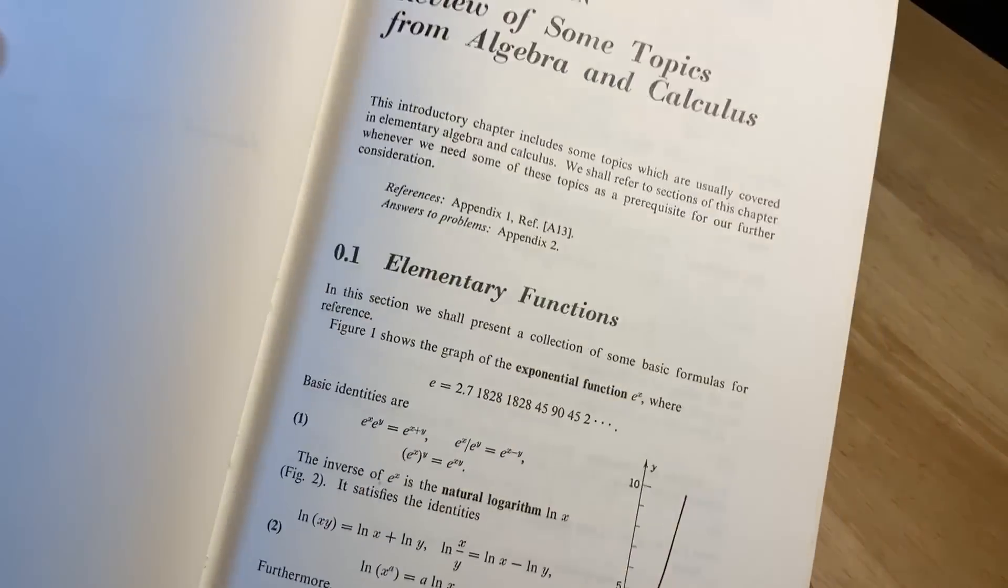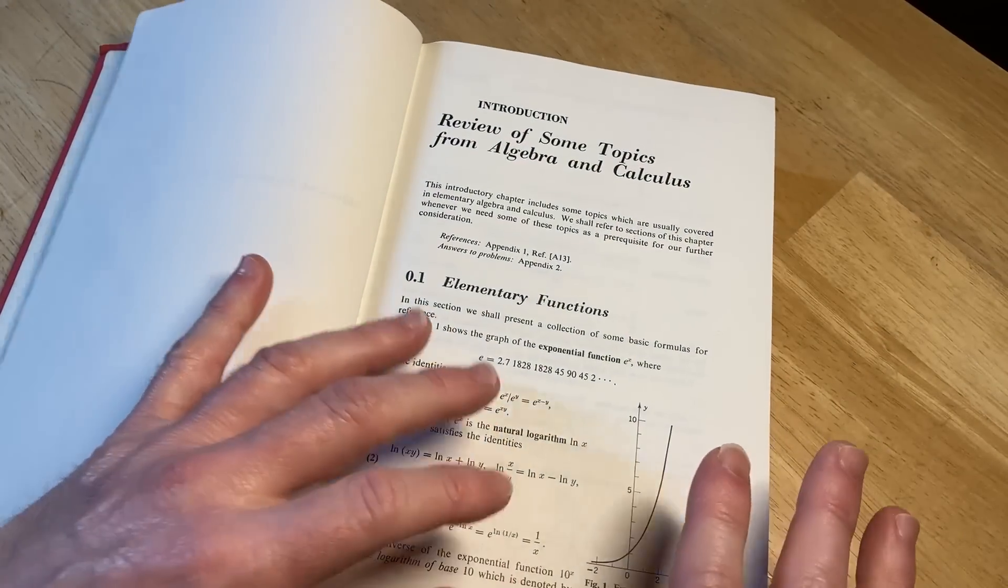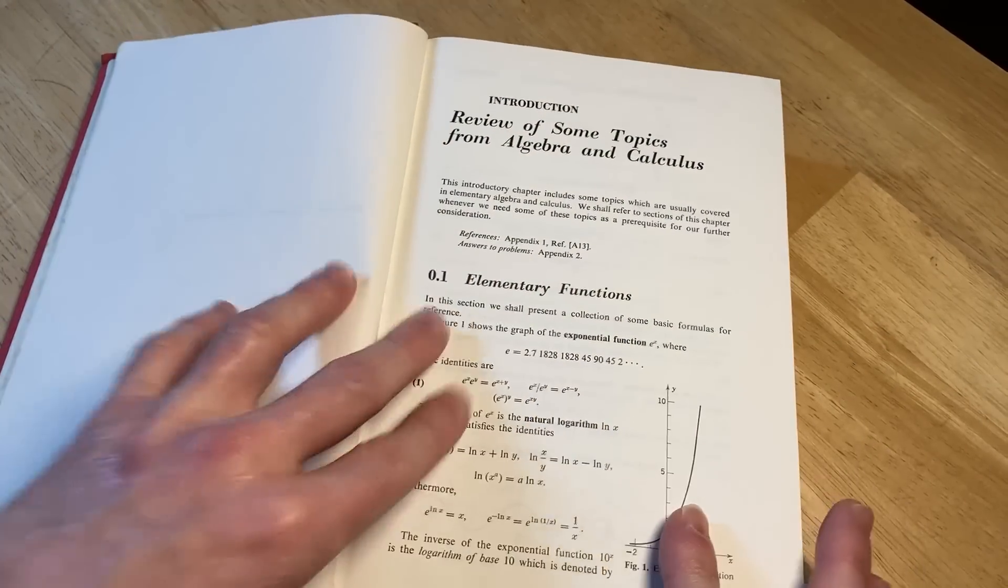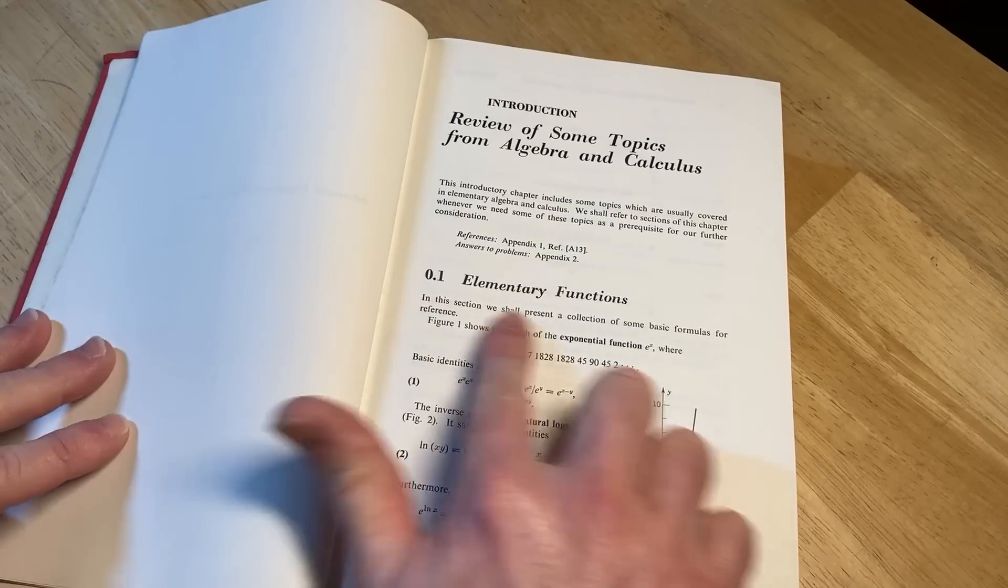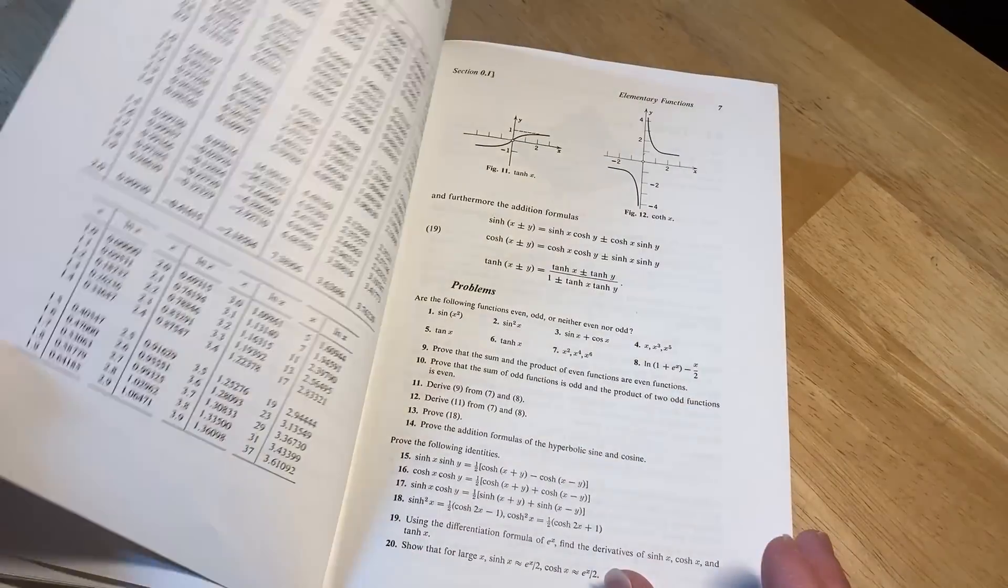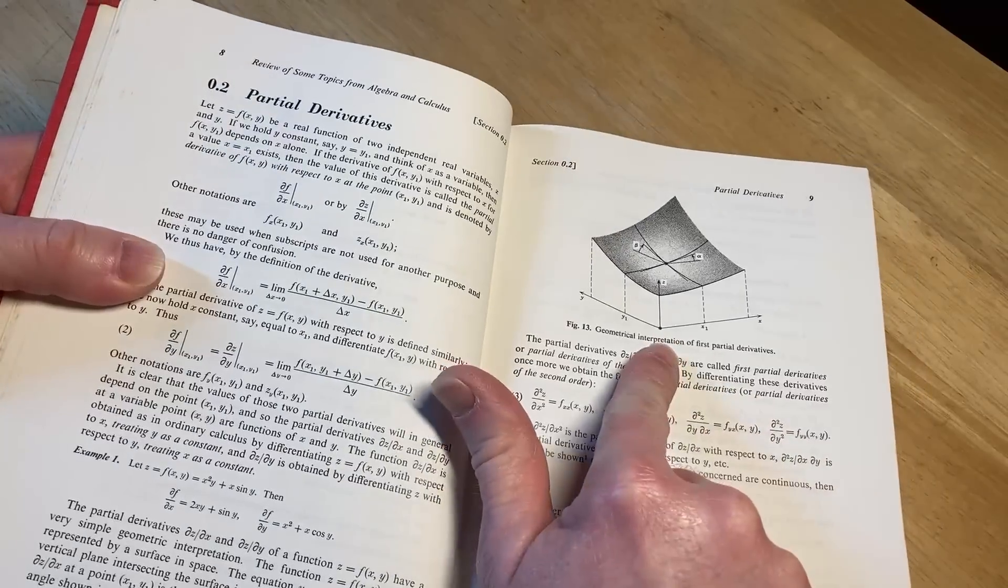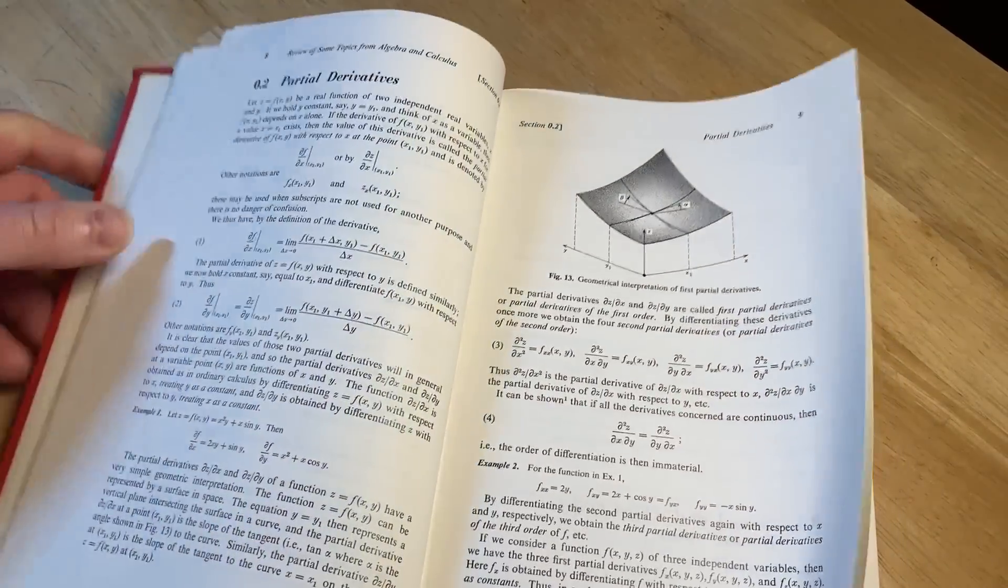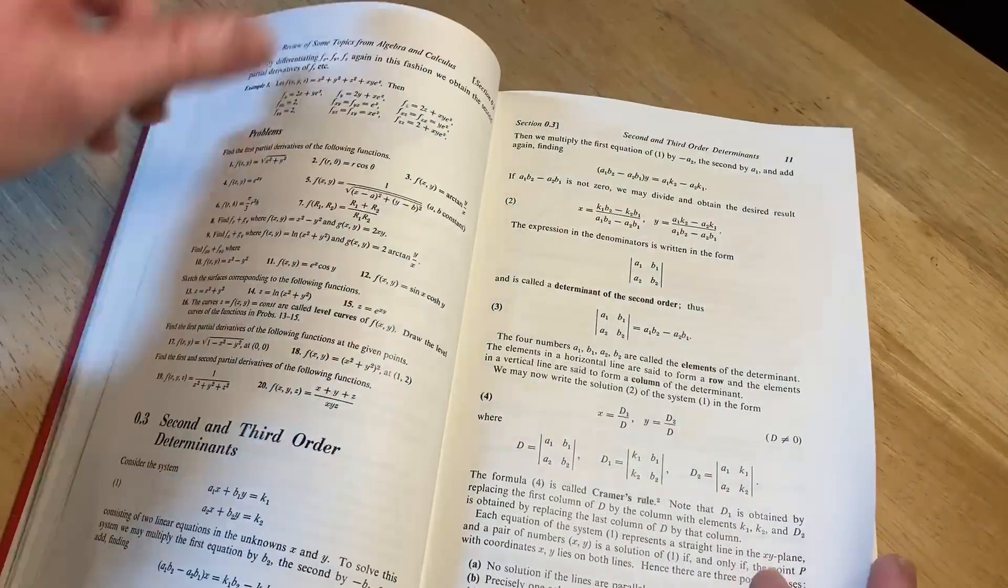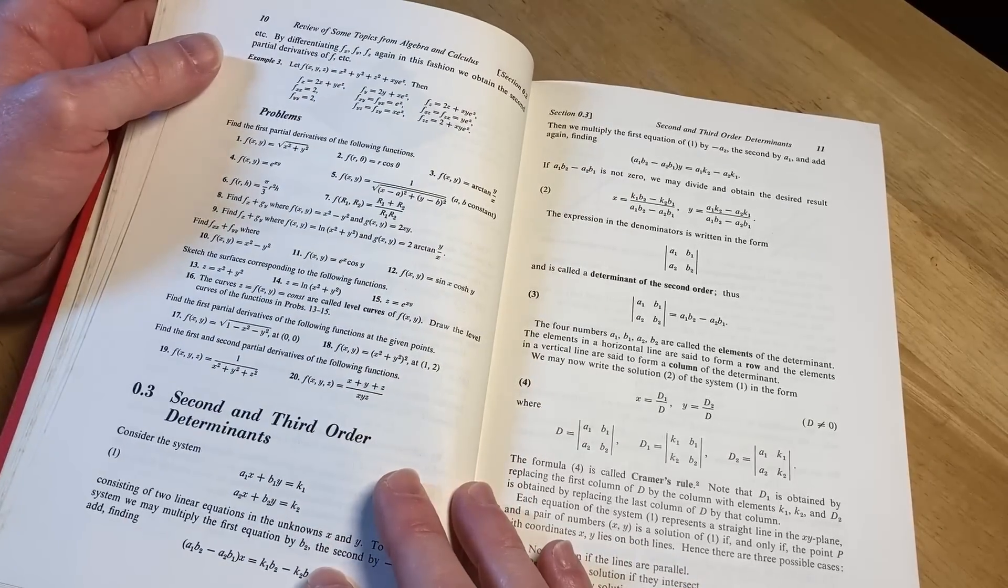I like books that start like this that are very basic. Oh, something else I should tell you that's really cool about this book—so it's written by Kreysig. Notice the sections: 0.1, see how it says elementary functions? So you read, then you've got some problems. And then 0.2, partial derivatives, and here's a nice geometric interpretation of partials. So you read, and then there's some problems. So it's got small sections, and that's one of the things I like about Kreysig's other book.